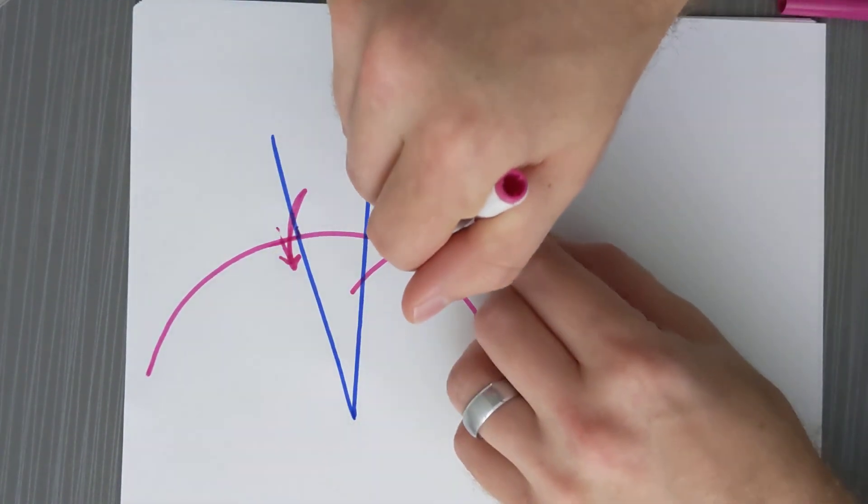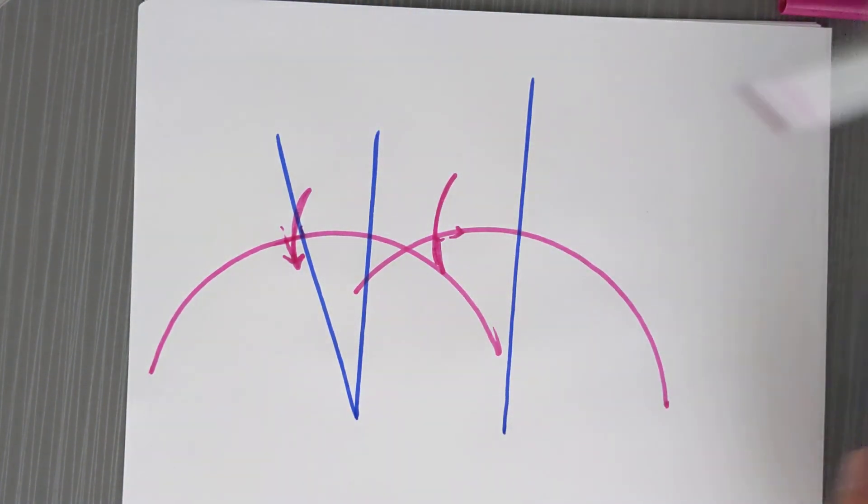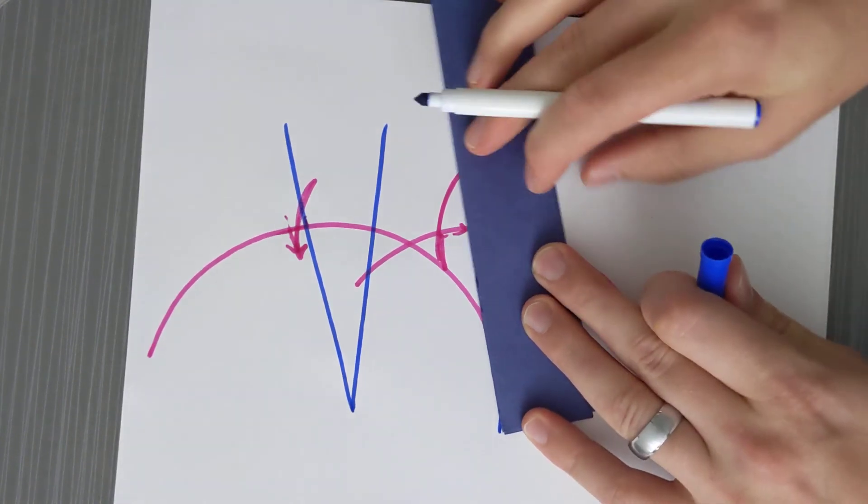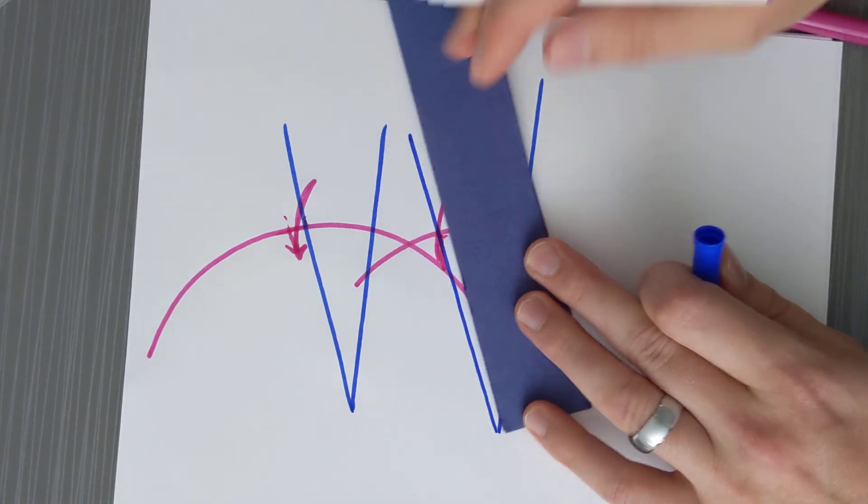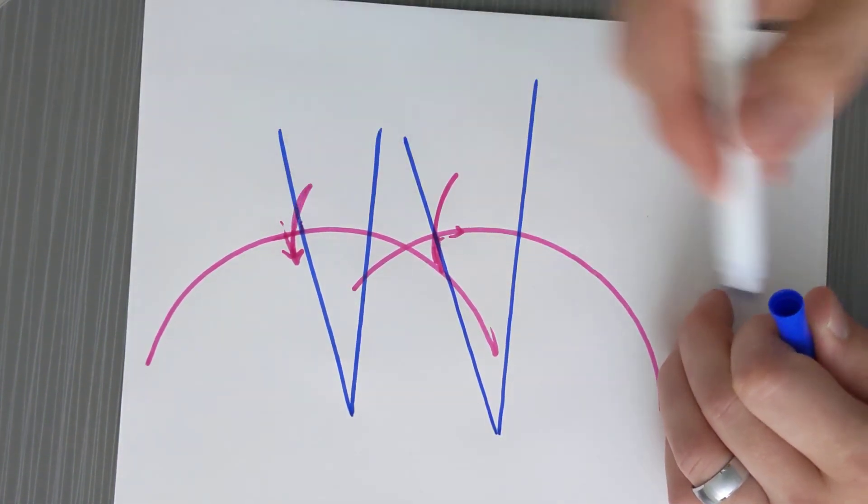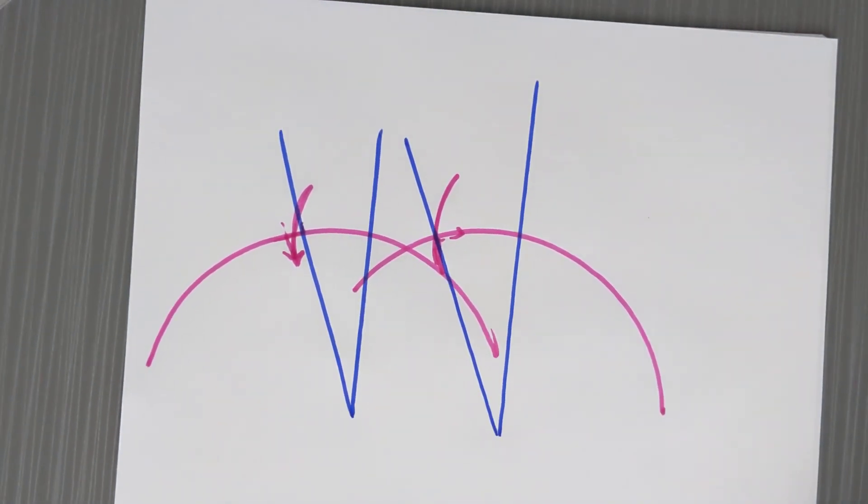then down here we can do the same thing. And if I connect those two lines where they intersect, our angles will be congruent. Now it looks like I wasn't perfectly lined up with my arcs. If I had been more careful, this would be a more perfect copy. So we can copy angles, we can copy segments.